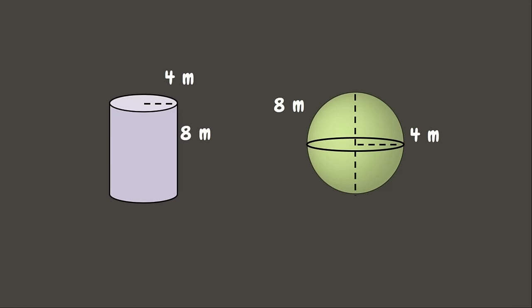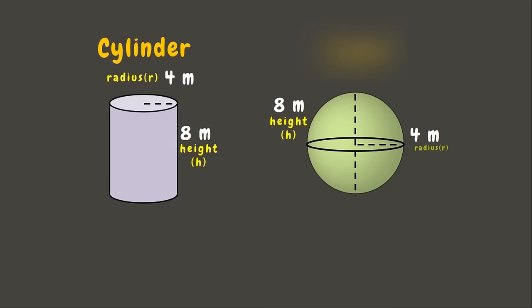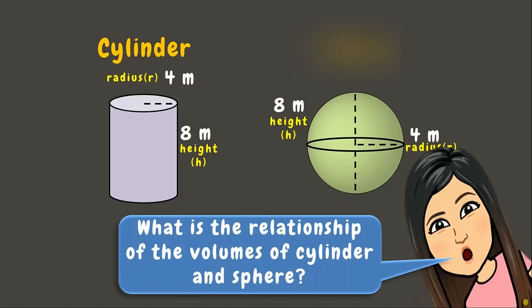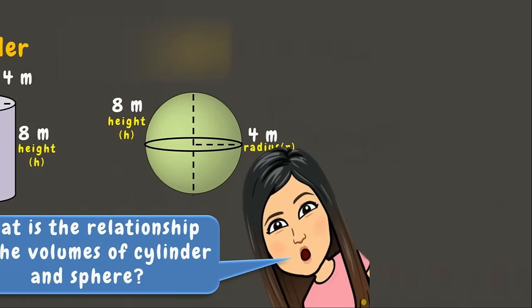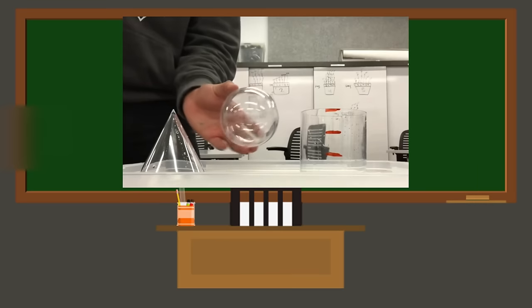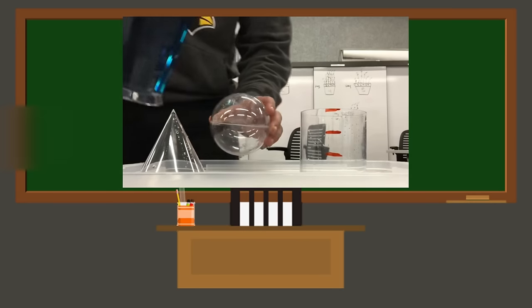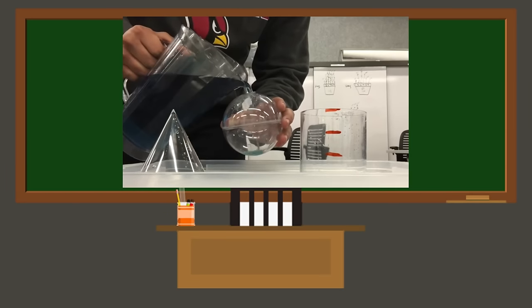Last one — we have a cylinder and a sphere with the same height and radius. Let's determine the relationship of the volumes of the cylinder and sphere using an experiment. In this experiment, the sphere and the cylinder have the same height and radius.